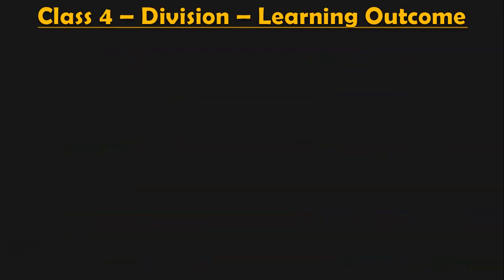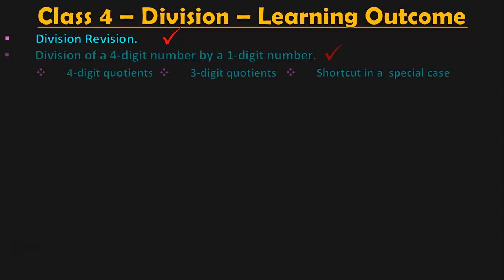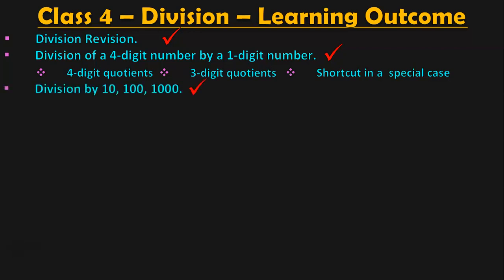Dear viewers, these are all the learning outcomes in class 4 under the topic division. The first topic in the first video was a quick revision of the division concept children have learned up to class 4. In the second video, we did division of a 4-digit number by a single-digit number, covering 4-digit quotients, 3-digit quotients, and a shortcut for a special case. Now, in this third video, we understood how to divide by 10, 100 and 1000 using the pattern division method.